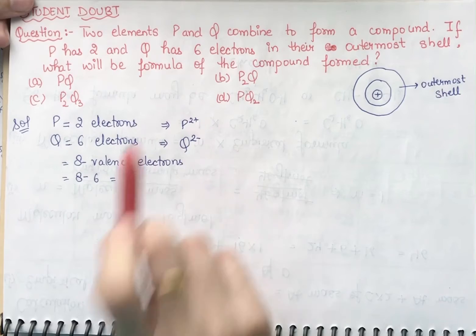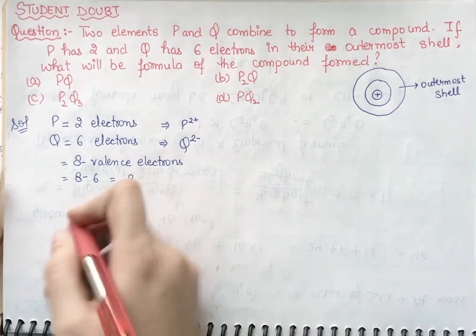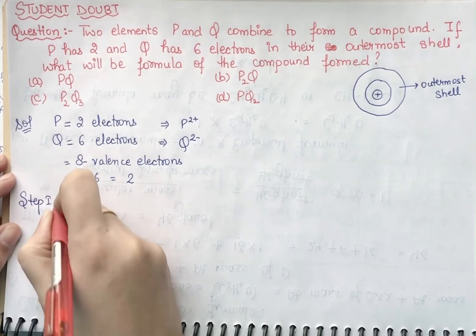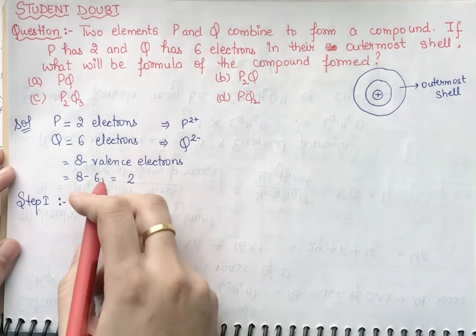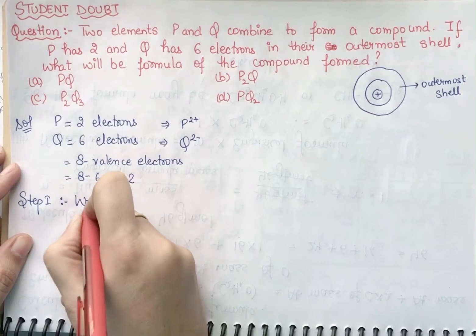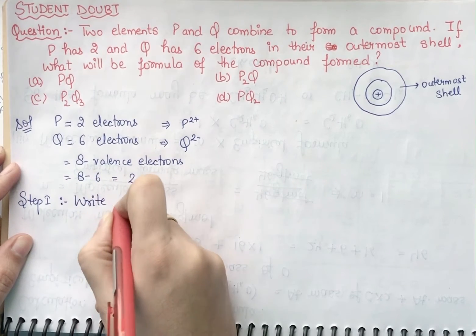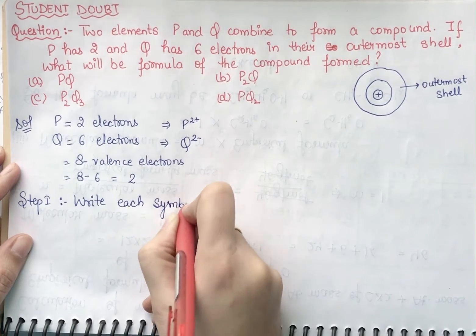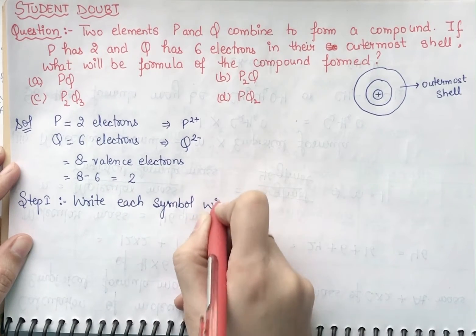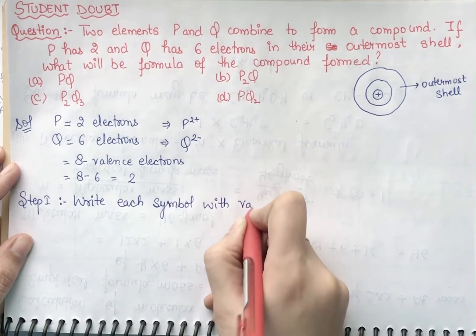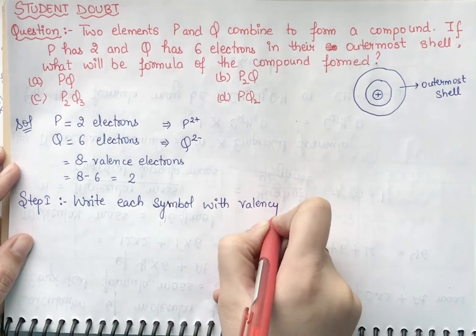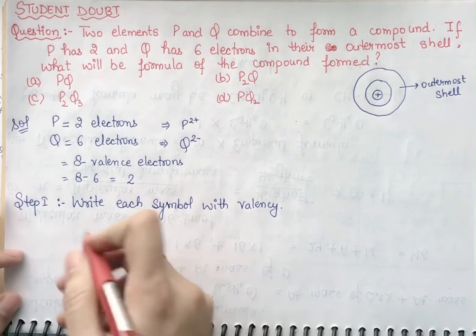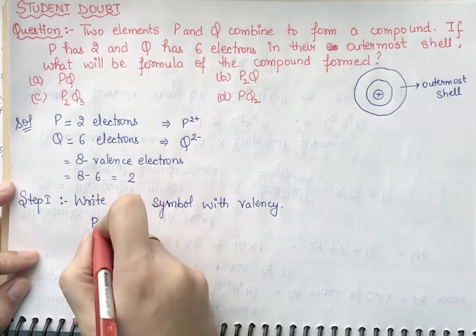Now there are some basic steps. Step one: write each symbol with its valency. We have to mention positive valency first, then negative valency. So P should be written first as P²⁺ and then Q²⁻.